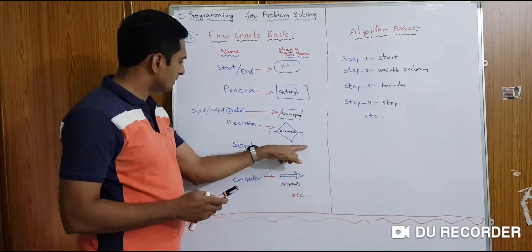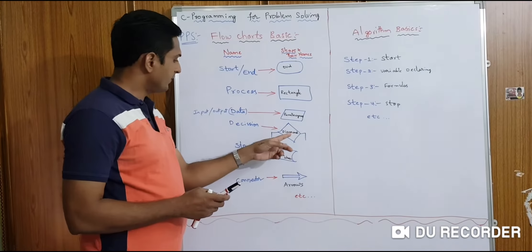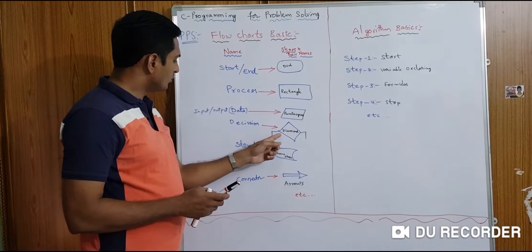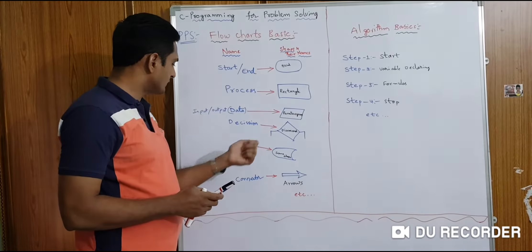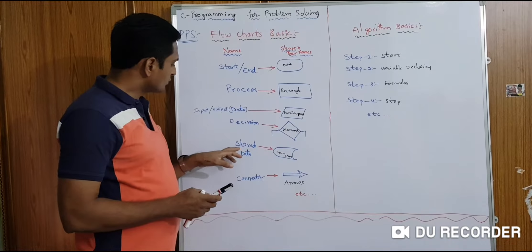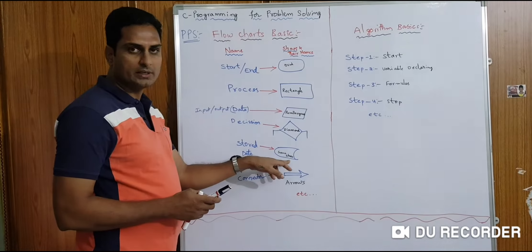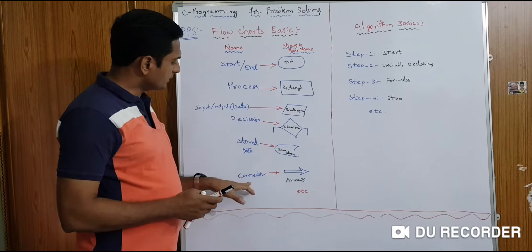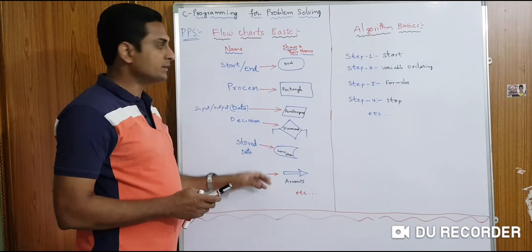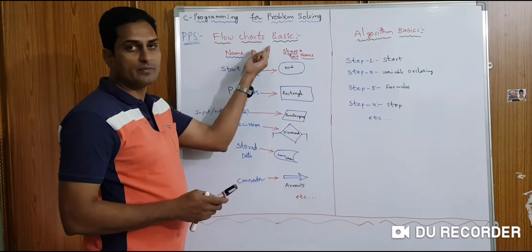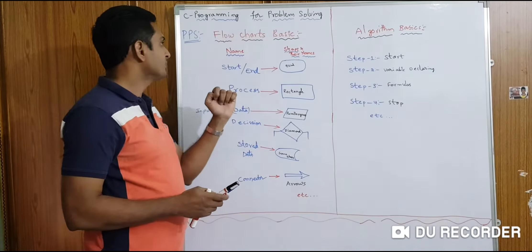If the condition is true, it will go one way; if it is false, it will go the other way — condition satisfaction. Stored data and extra shapes are also used. The arrow marker is indicated with a connector. These are the basics of flowcharts for a program.